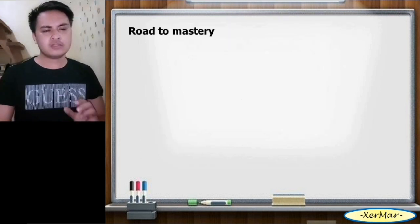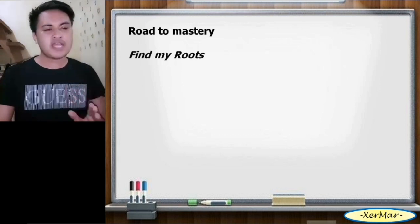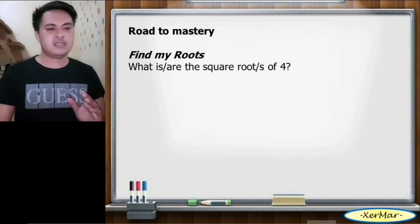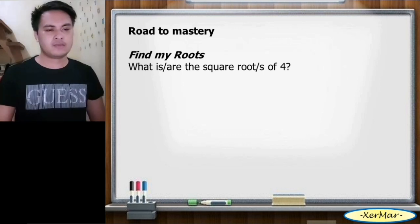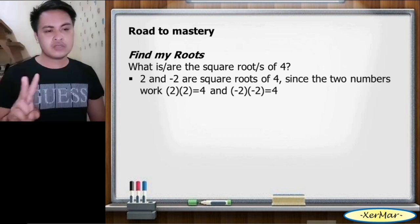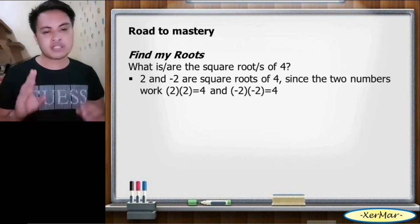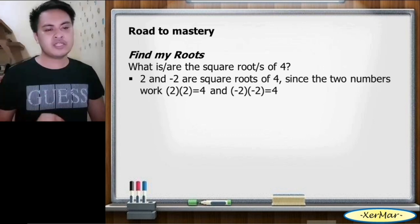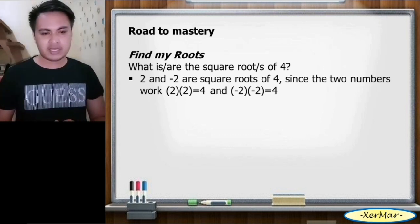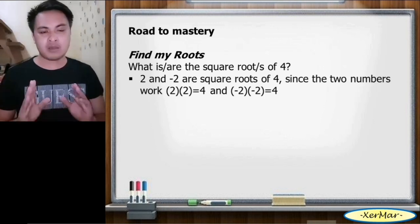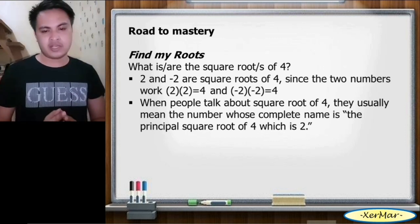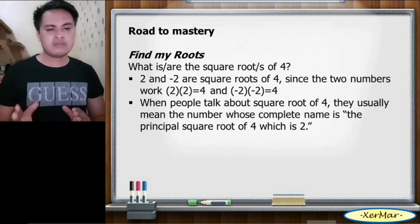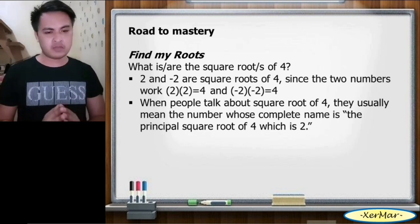We have the road to mastery. Find my roots. The question is: what is or are the square roots of 4? The answer is: 2 and negative 2 are the square roots of 4. Since both numbers work — 2 times 2 equals 4, and negative 2 times negative 2 is also 4. When people talk about the square root of 4, they usually mean the principal square root of 4, which is 2.